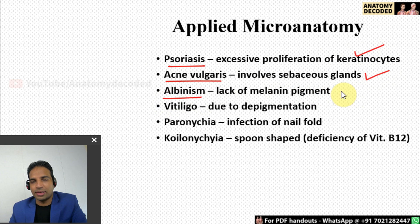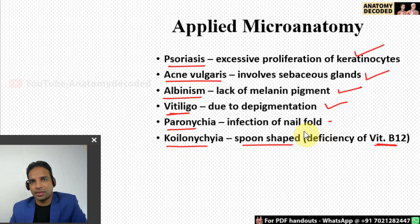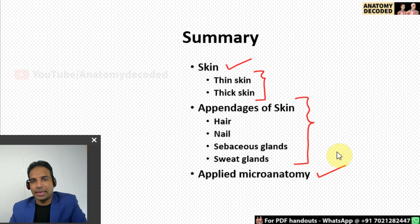Psoriasis involves excessive proliferation of keratinocytes. Acne vulgaris involves the sebaceous glands. Albinism is due to lack of melanin pigment — melanocytes in the basal layer of the epidermis are lacking. Vitiligo is due to depigmentation. Paronychia is infection of the nail folds. Koilonychia is a cone-shaped or spoon-shaped nail, usually due to iron deficiency. In summary, we covered the basic structure of the skin, micro anatomy images of thin and thick skin, exam diagrams, appendages of the skin, and applied micro anatomy.